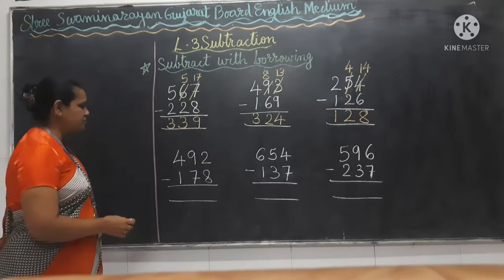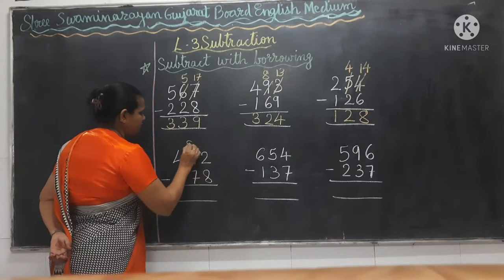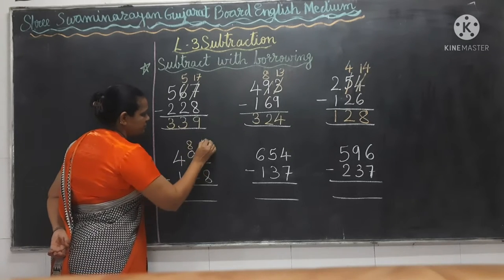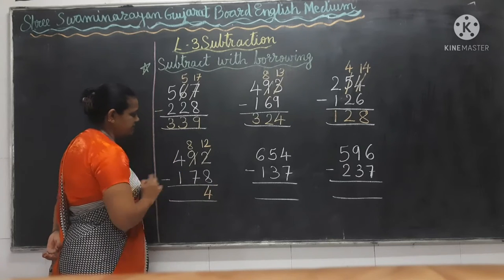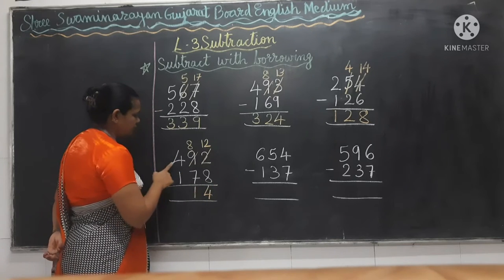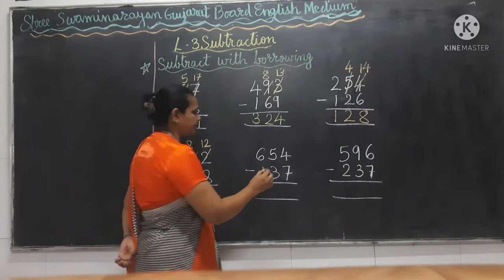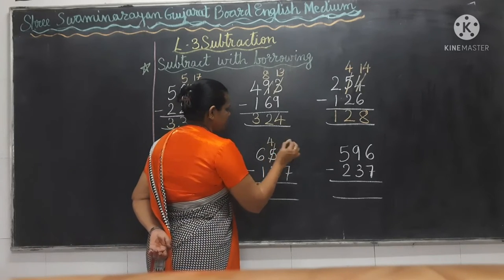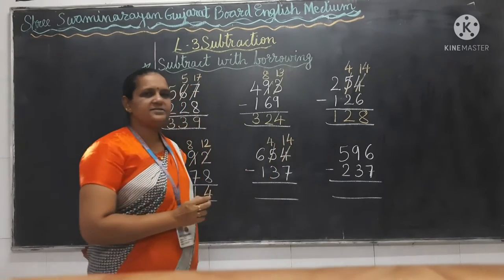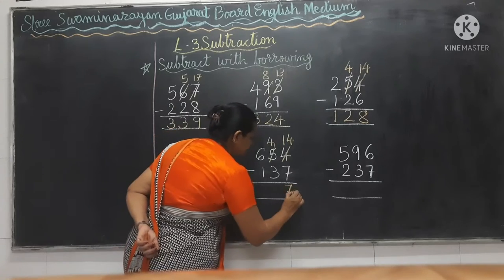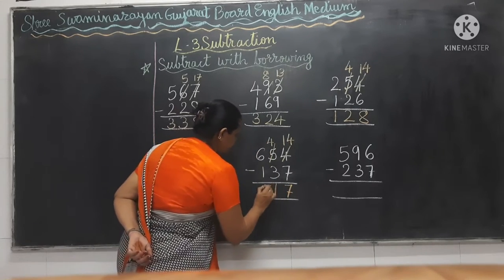Next one: 2 minus 8 — so again you have to borrow. 12 minus 8 gives 4; 8 minus 7 is 1; 4 minus 1 is 3. Next: we get 14. 14 minus 7 is 7; 4 minus 3 is 1; 6 minus 1 is 5.